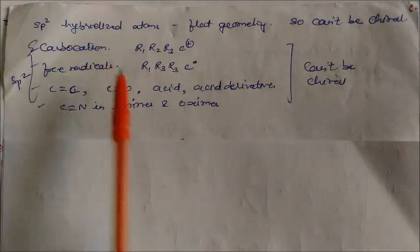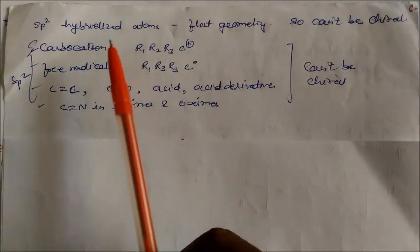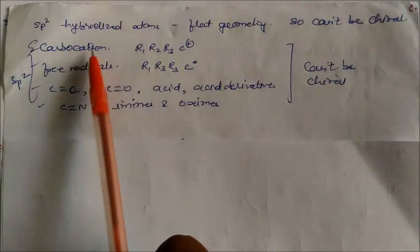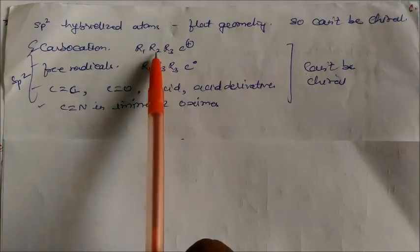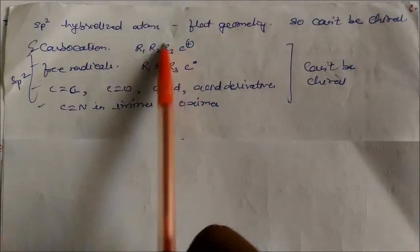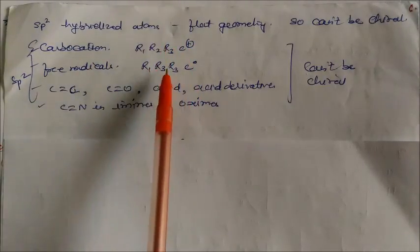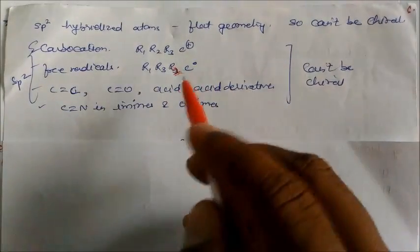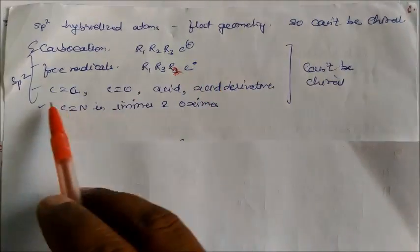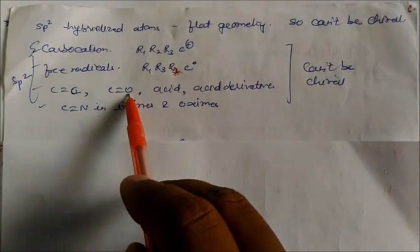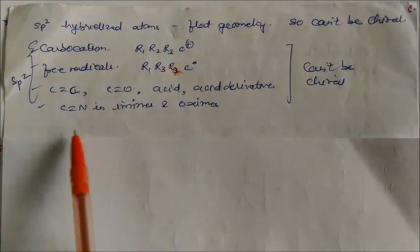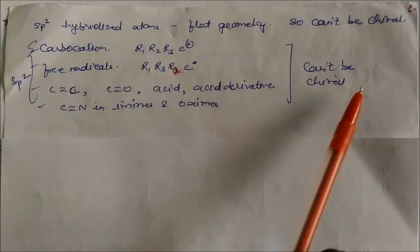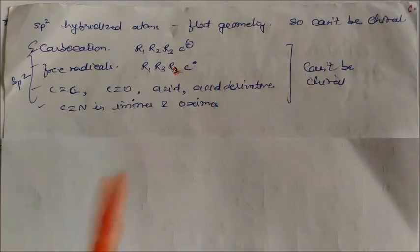sp2 hybridized atoms have flat geometry — in the case of nitrogen, they cannot be chiral. Like carbocations (R1, R2, R3, C+), carbon radicals (R1, R2, R3 with radicals), C=C double bonds, C=O (aldehydes and ketones), C=N (imines and organs) — all these are sp2 hybridized. So they cannot be chiral. Remember this as a note.